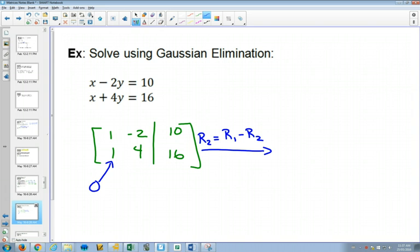So if I've decided to change row 2, when I write my matrix, the first thing is row 1 is not changing right now. 1, negative 2, 10. But what happens if I take row 2 and I change it to equal row 1 minus row 2? Well, row 1 minus row 2 would give me 0 here. Negative 2 minus 4 would give me negative 6 there. And 10 minus 16 would give me negative 6 there. And we have succeeded in getting a 0 in the bottom left-hand corner.